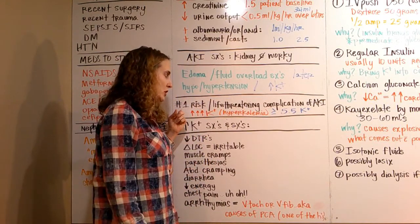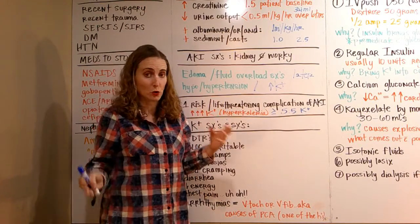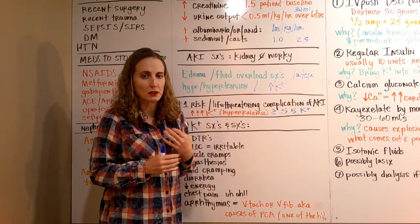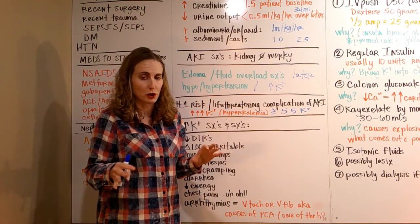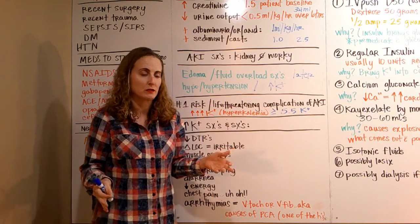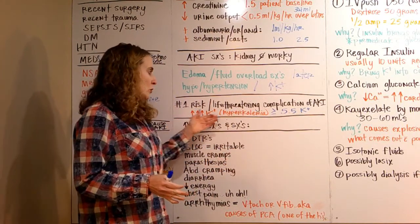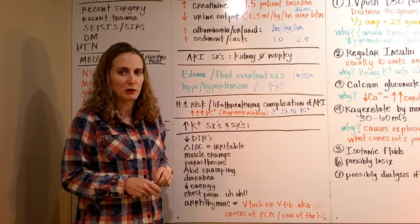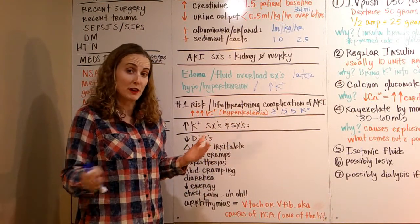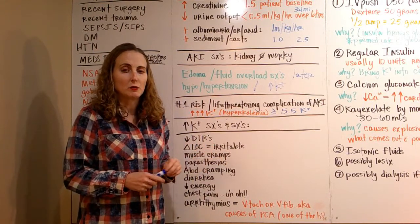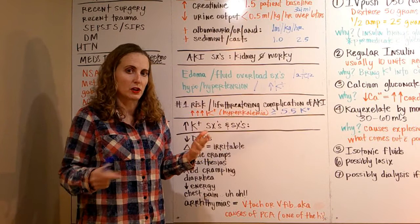The number one risk for an acute kidney injury, the thing that's going to kill them the quickest: the fluid overload and low output will kill them for sure, but the high potassium will kill them in hours if you don't fix it. We start treating hyperkalemia with medications once it hits 5.5. 3.5 to 5 is considered normal in most laboratories, so once it hits that 5.5 mark, we start treating it medically.